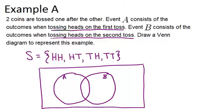So event A was tossing heads on the first toss. So if we look at our sample space, there are two ways that we toss heads on the first toss. So both of those will go in circle A. But before we put them in, we should look at circle B, or event B. That says when you toss heads on the second toss, you're in event B. So the two places where you toss heads on the second toss are here and here.